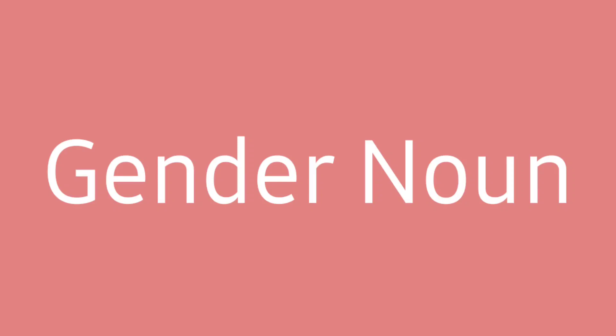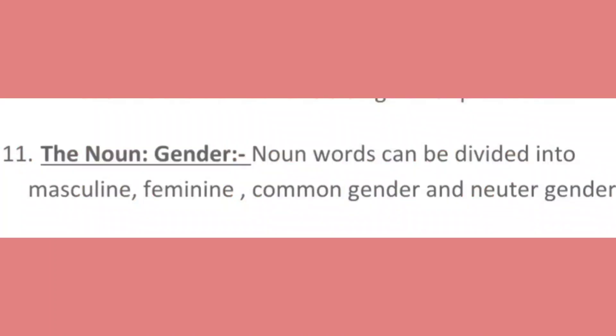We are continuing with types of noun with another topic: gender nouns. In gender nouns there are four different categories. So one by one we will learn about each category. The noun gender word can be divided into masculine, feminine, common gender, and neuter gender. We will start the categories one by one with their definitions.